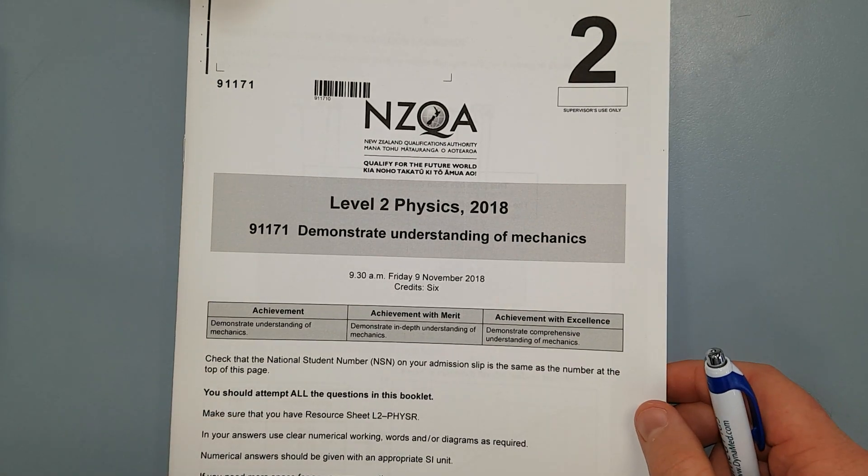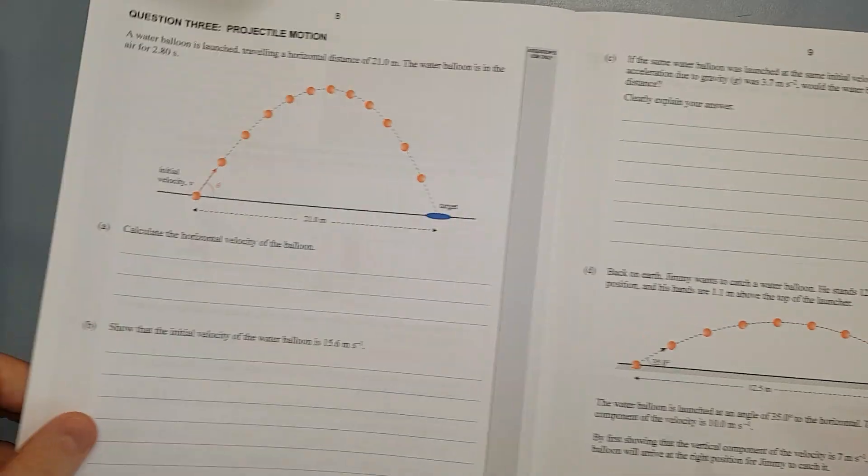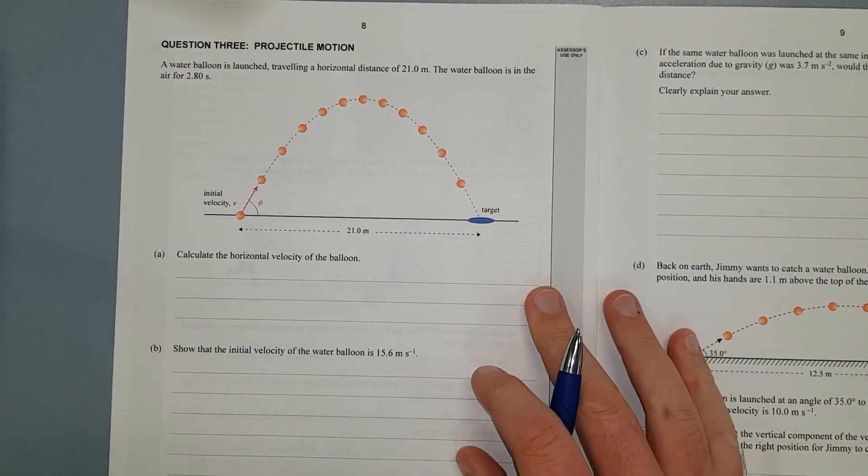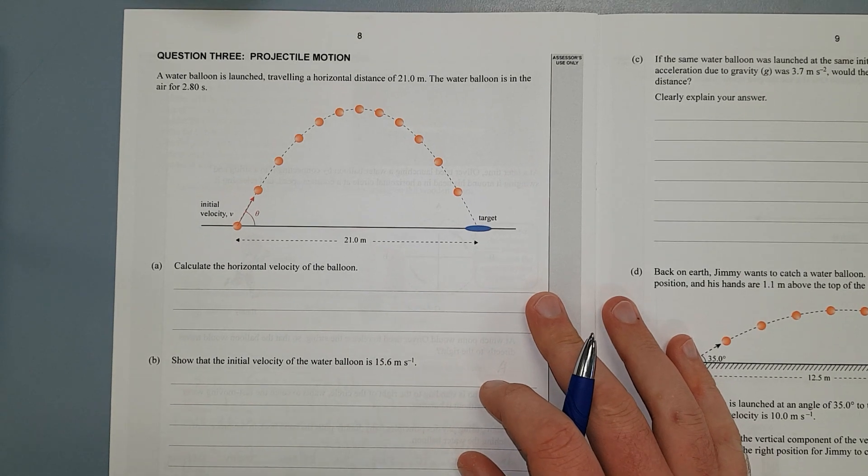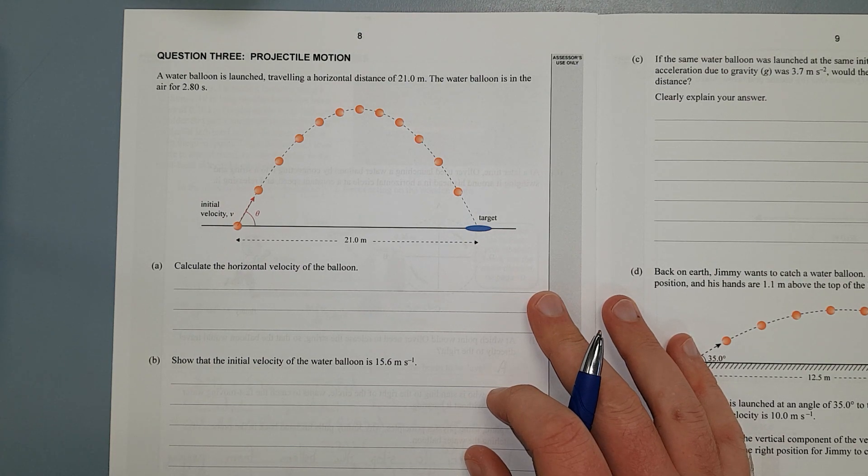With this video I'll be working through the Level 2 2018 mechanics exam, question 3. Question 3. A water balloon is launched travelling horizontally at a distance of 21 metres. The water balloon is in the air for 2.8 seconds.